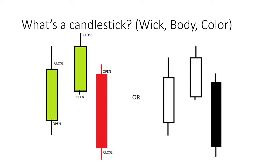If you look at the first candle on the left, we can see a green candle. If this candle is green, all that it means is that the stock closed at a price that was higher than where it opened — meaning when the day started. So the day could have started at $6 and ended at $7. That would be a green candle.